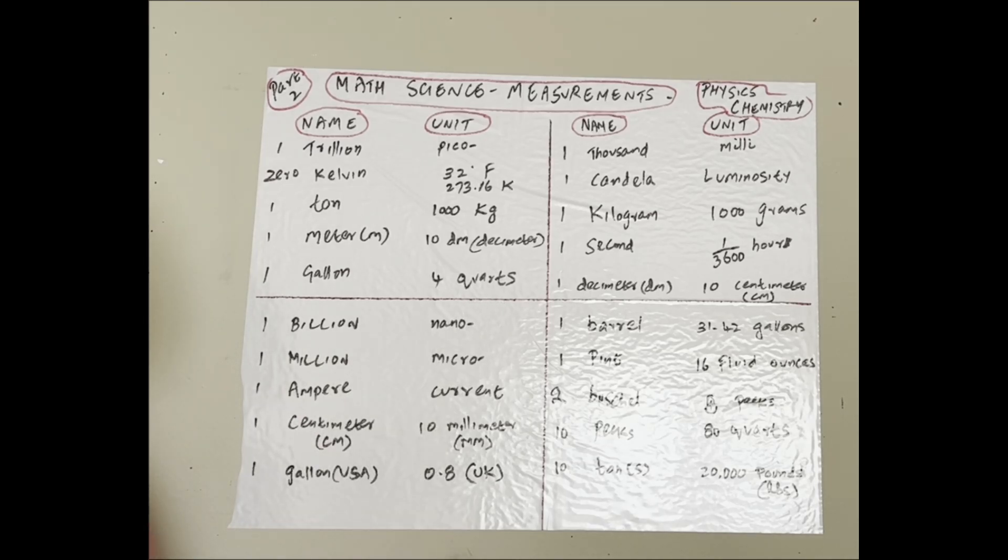One billion is nano. Nanotechnology we use in physics, chemistry, nanoscales related to carbon. Please watch my physics and chemistry videos. We have more than 700 videos on different categories and 140,000 subscribers worldwide. We're working back. One million is micro.